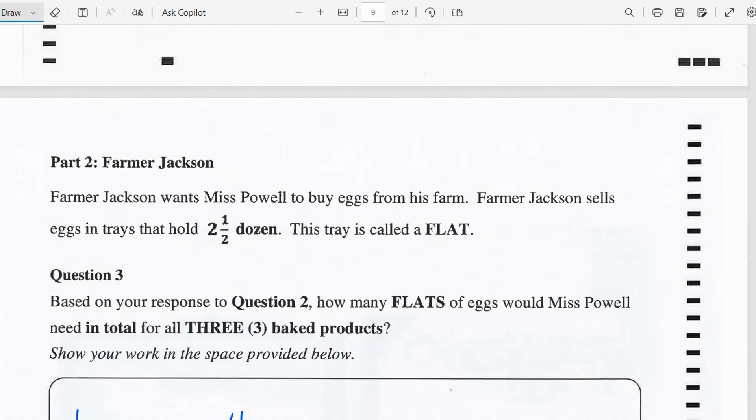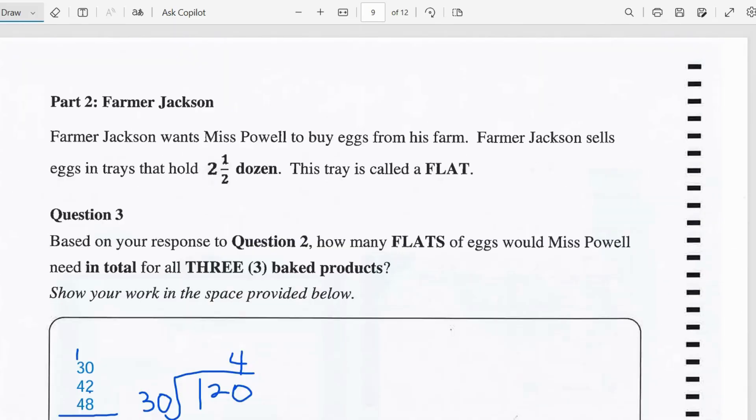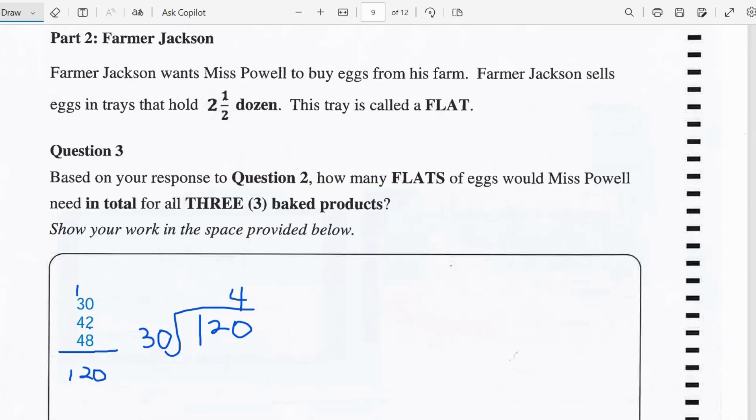Now we're moving on to part 2, Farmer Jackson. Farmer Jackson wants Miss Powell to buy eggs from his farm. Farmer Jackson sells eggs in trays that hold 2 and a half dozen. This tray is called a flat. Based on your response to question 2, how many flats of eggs would Miss Powell need in total for all 3 baked products?